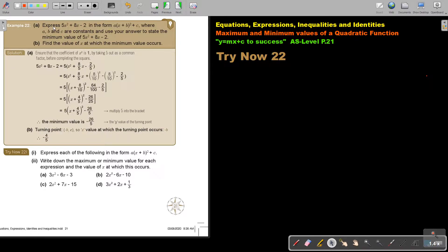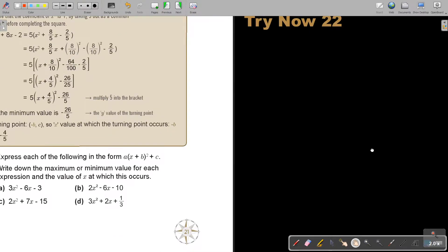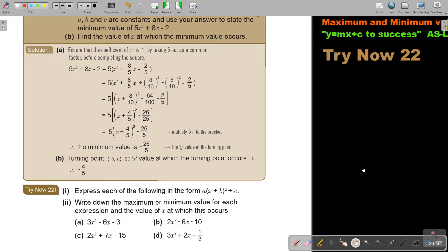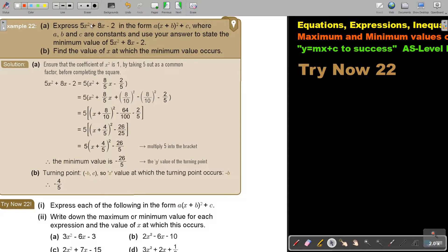Let's look at an example. Express this expression in this form, where a, b, and c are constants, and use your answer to state the minimum value of this. Find the value of x at which this minimum value occurs.